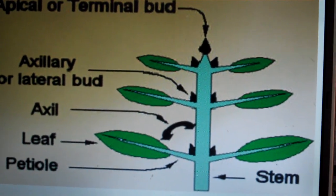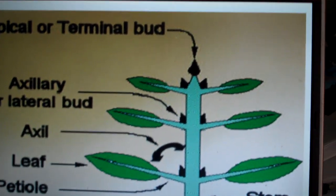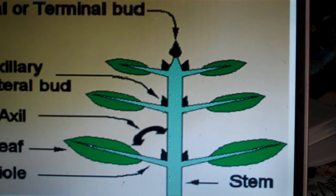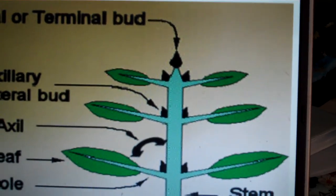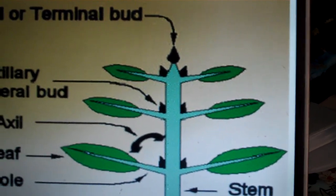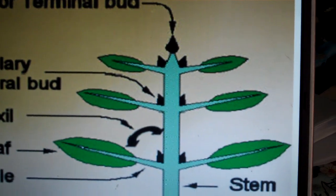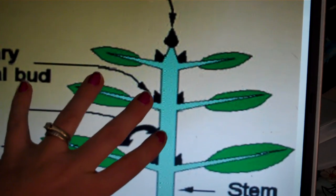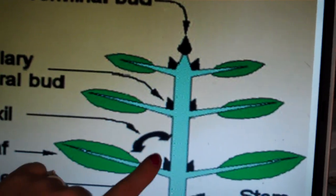However, if the terminal bud is removed, let's say it's eaten by a predator or it's blocked, maybe it's in shade, then the plant will concentrate its resources and increase in size by the lateral buds.